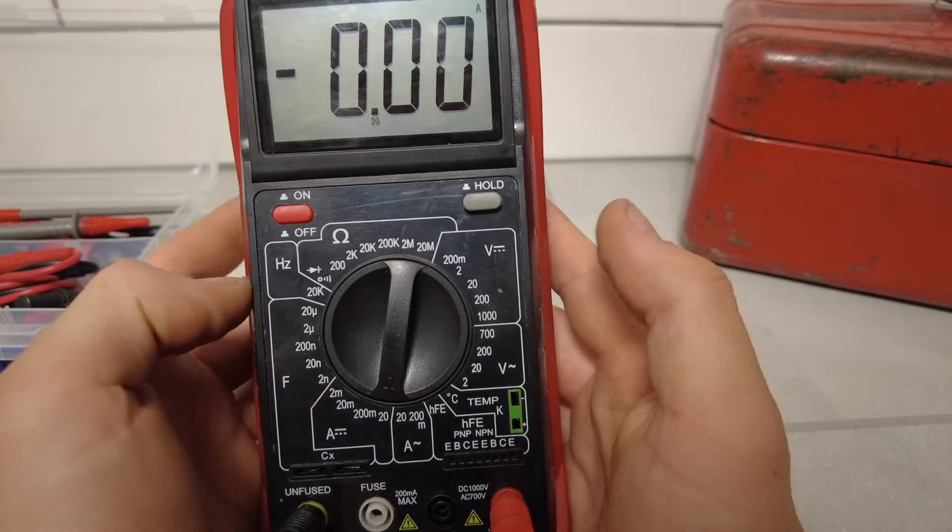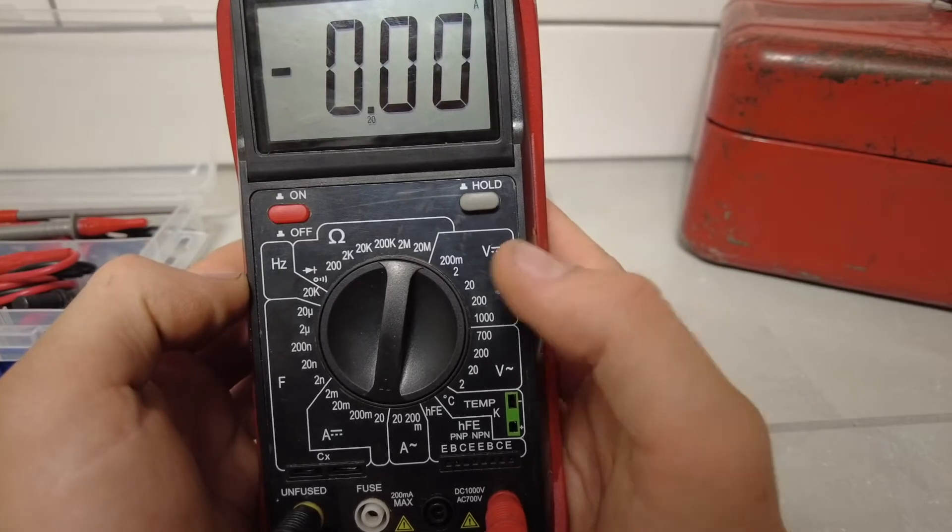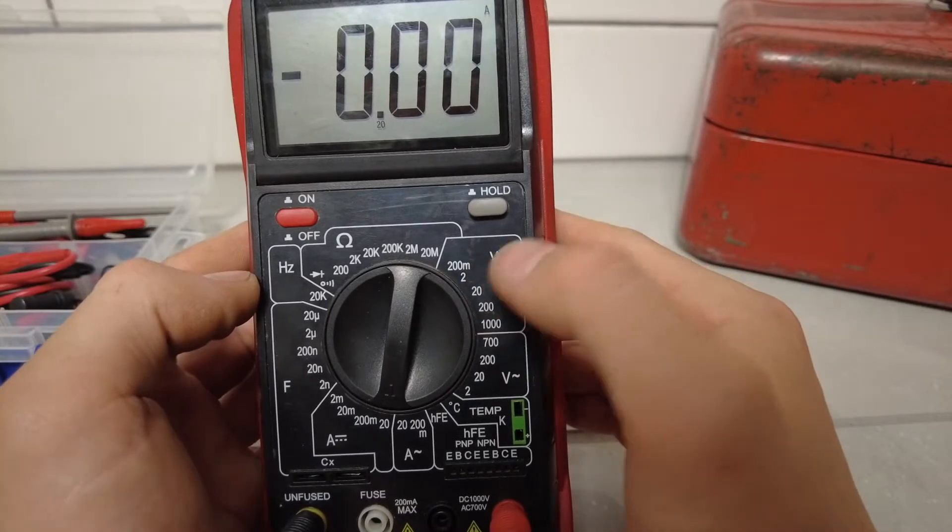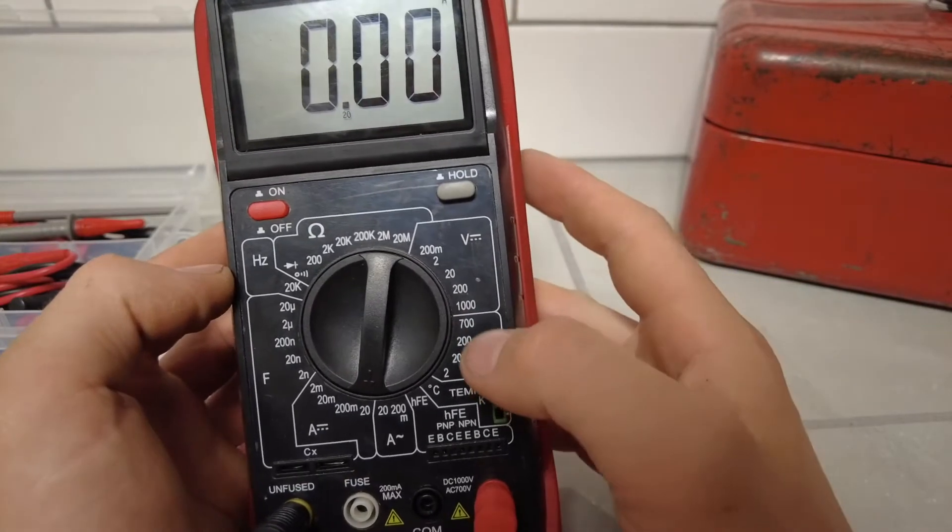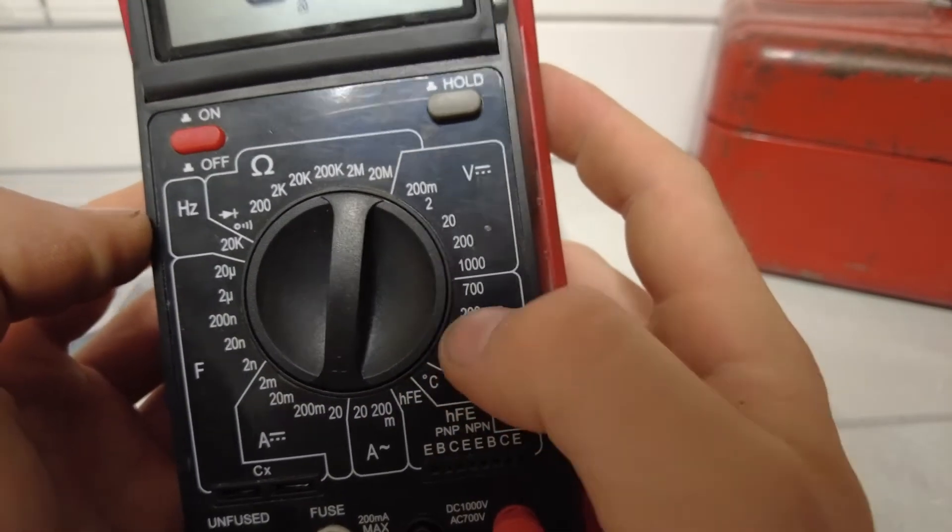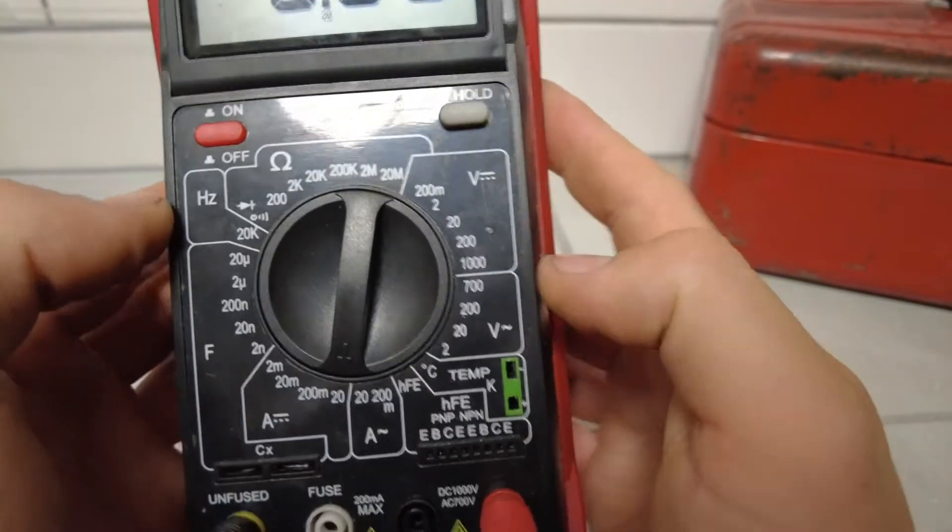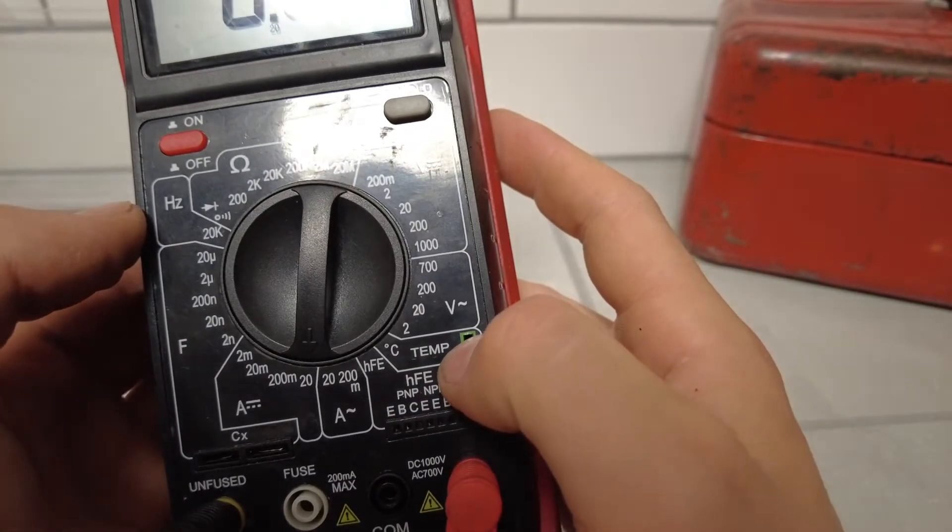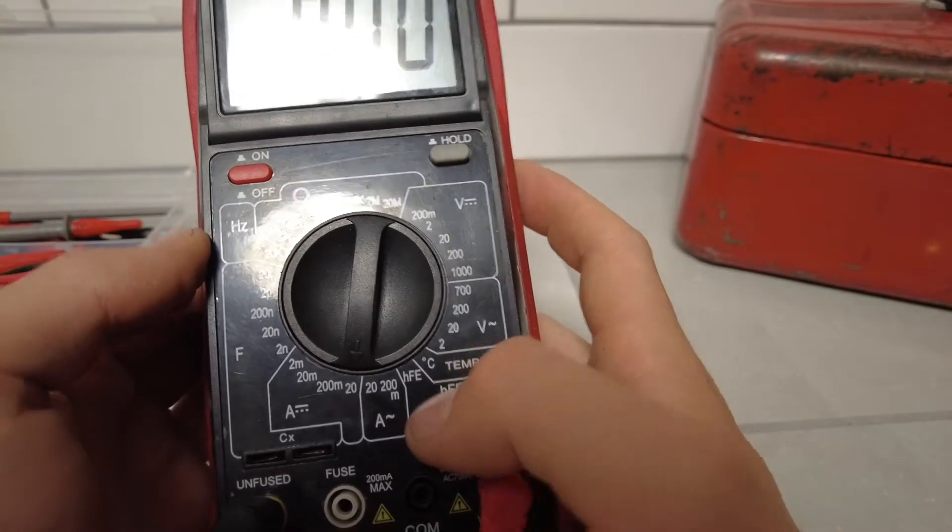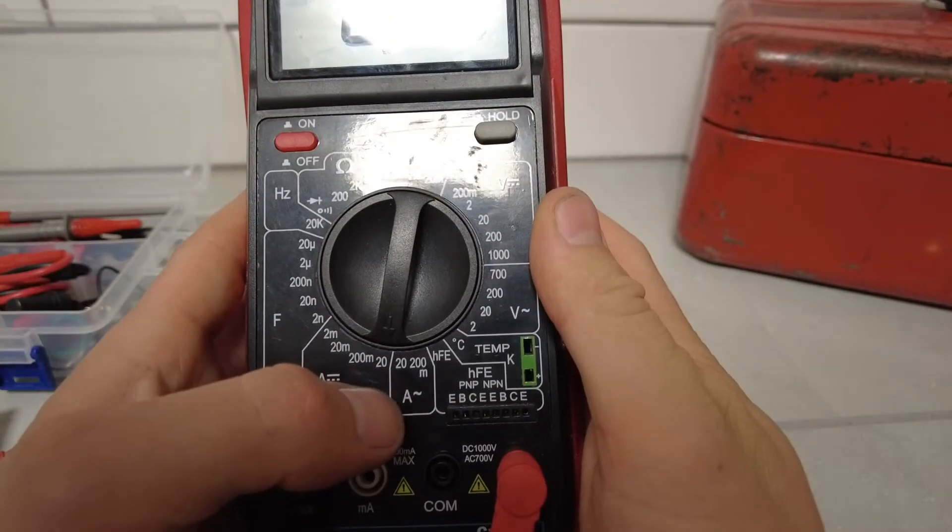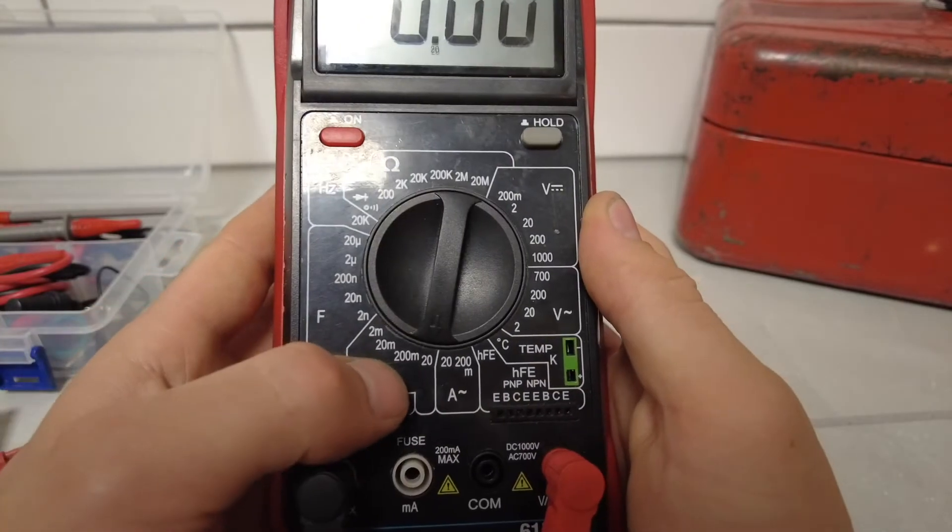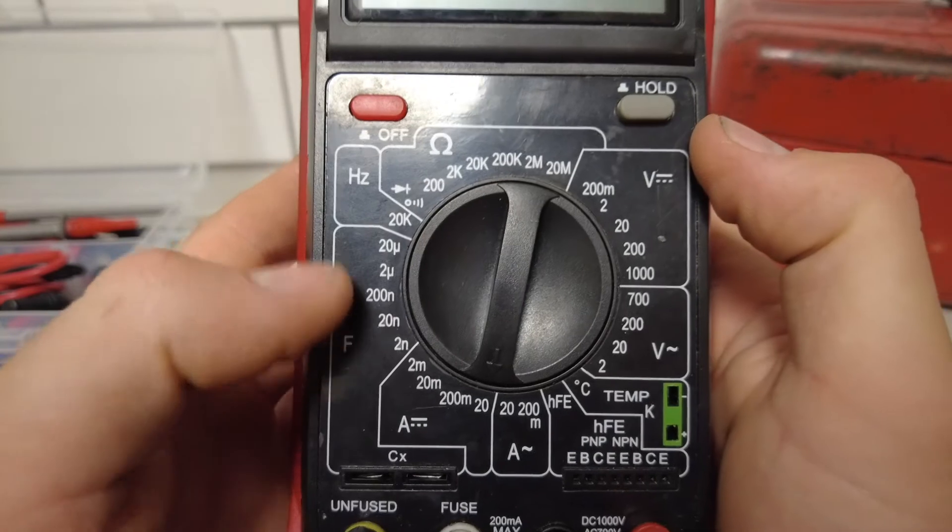We'll go over a quick overview. We've got the direct volt section, so it goes from 200 millivolts to a thousand volts. It goes from 700 to 2 volts alternating current. You've got your temperature thing, your transistor section, and then you have your alternating current amps right here and your direct current amps right here.